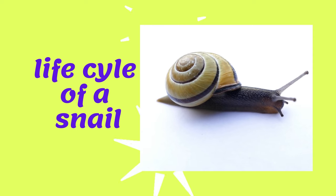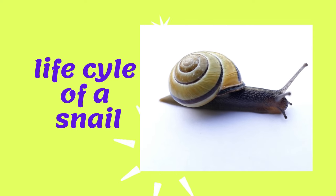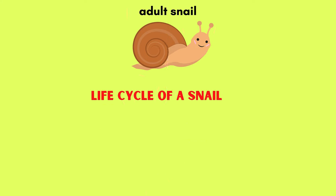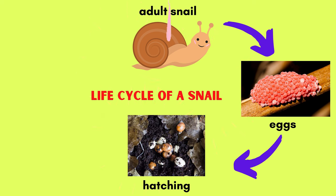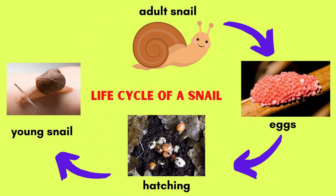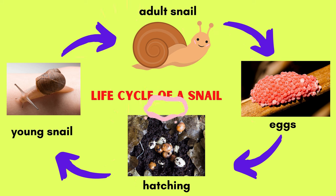Life cycle of a snail. An adult snail will lay eggs. The eggs will hatch, then young snails will come out and grow into an adult snail.